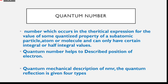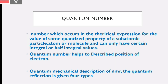First of all, what is the quantum number? The number which acquires in this theoretical expression — there is a theoretical expression for the value of some quantized property. That is, there is a value in subatomic particles, atoms and molecules. That is the integral and half-integral value.